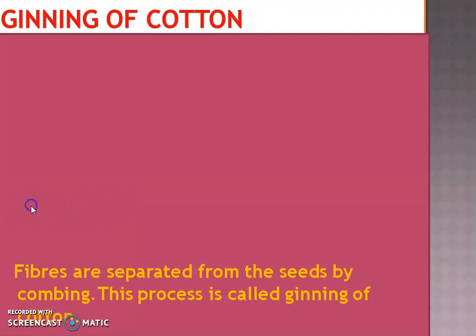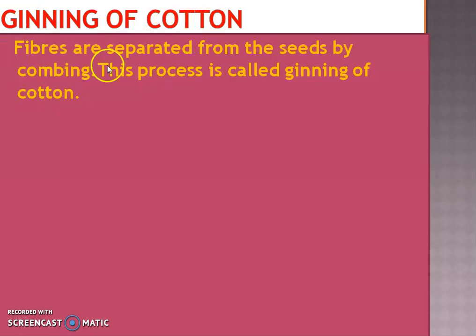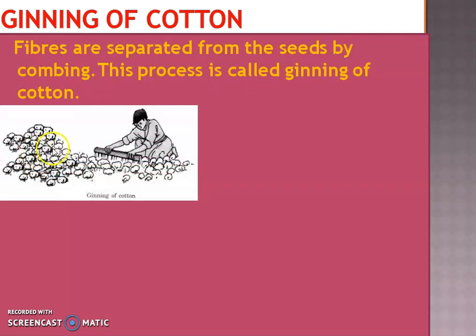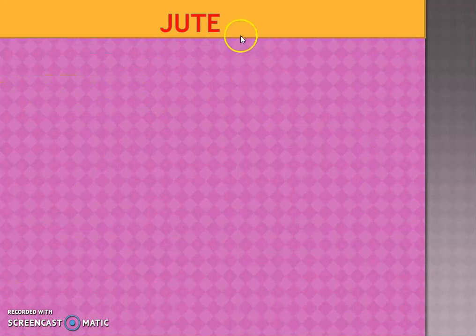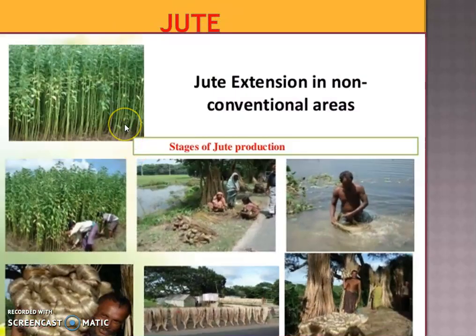Fibers are then separated from the seeds by combing. This process is called ginning of cotton - it means fibers are separated from the seeds by combing. Ginning was traditionally done by hand but these days machines are also used. Another plant source is jute. Jute fiber is obtained from the stem of the jute plant; it is cultivated during the rainy season in India, mainly in West Bengal, Bihar, and Assam. The jute plant is normally harvested at the flowering stage. The stems are immersed in water for a few days; the stems rot and fibers are separated by hand.